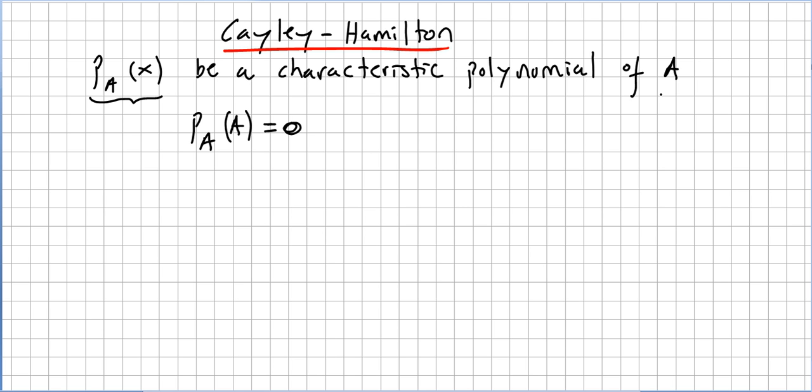The Cayley-Hamilton theorem says that if P_A(x) is the characteristic polynomial, A satisfies the characteristic polynomial.